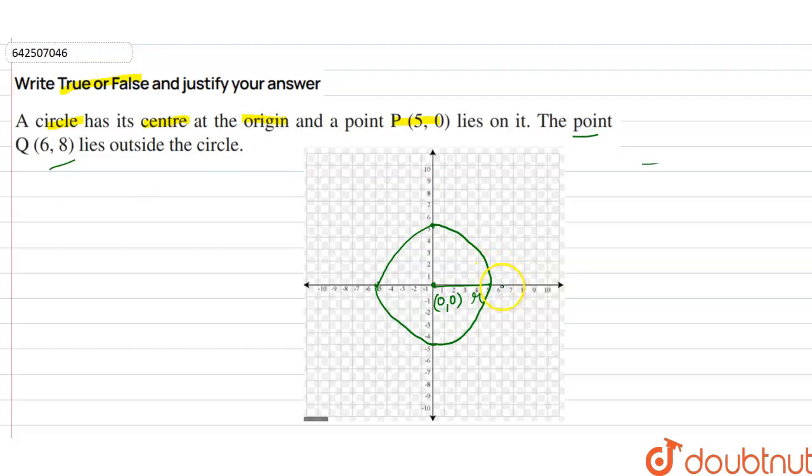So (6,8) means the coordinate of x-axis is 6 and the coordinate of y-axis is 8. So this is point (6,8). This is Q(6,8).